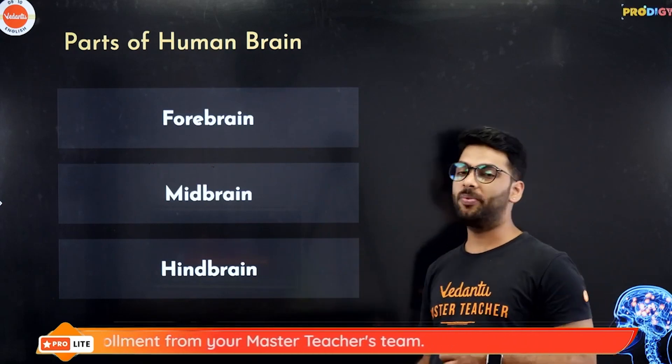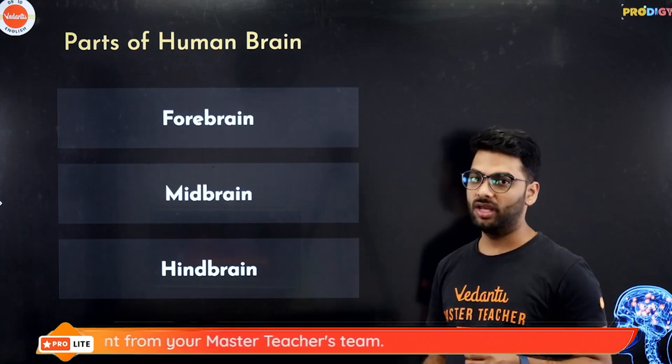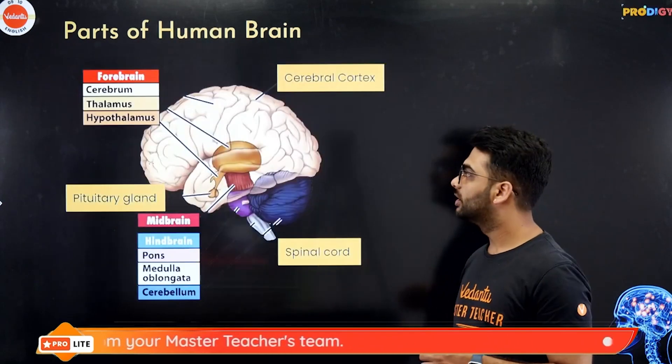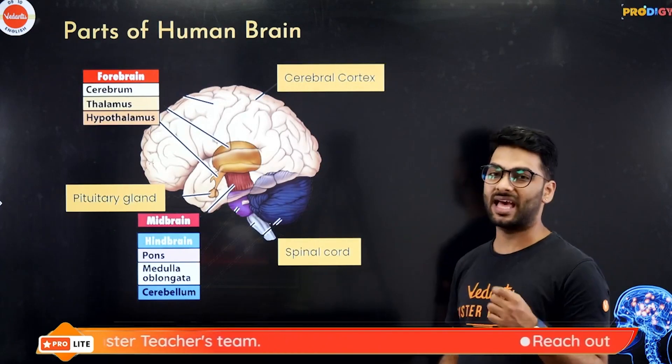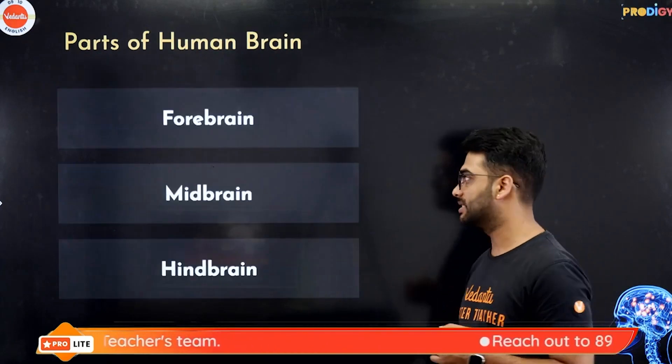In the forebrain, we have the cerebrum, thalamus and the hypothalamus.